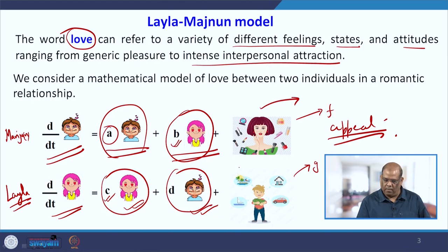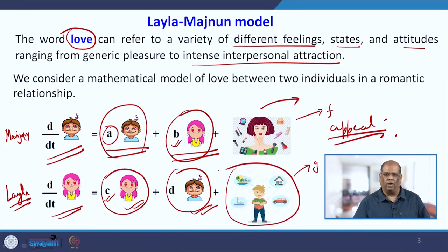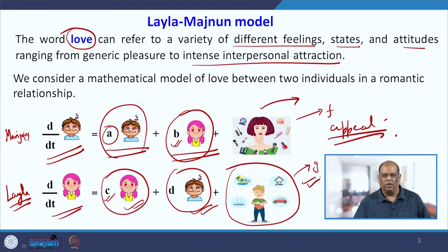Similarly, G is Laila's reaction to Majnu's appeal. Other than looks, she may consider his social status — whether he owns property or a car, how much money he can spend on a date — those are taken care of by function G.